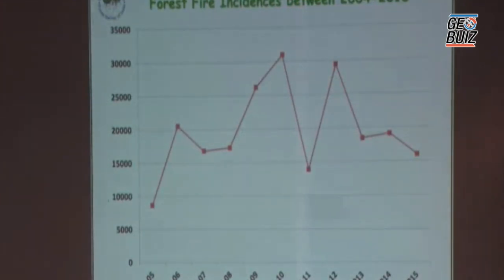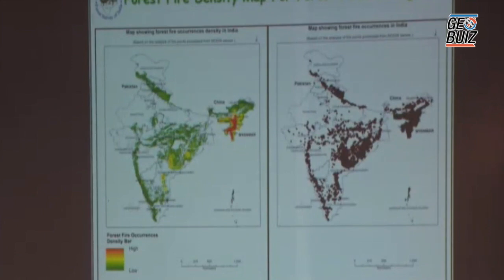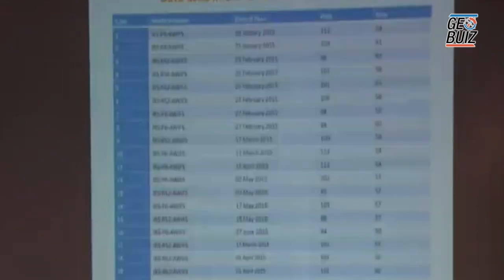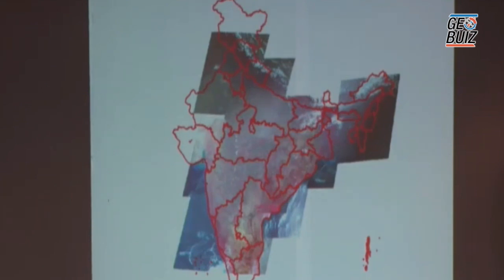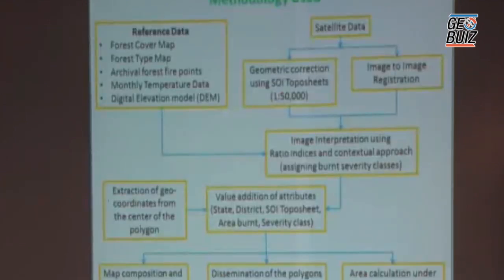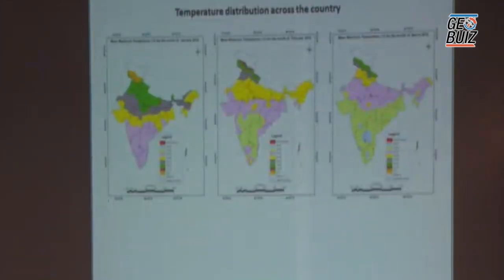These are the fire occurrences reported between 2004 and 2015. The forest fire density occurrence map is very important for selecting a particular satellite scene. Based on the density of forest fire occurrences we identify suitable satellite scenes. In 2015 we identified the number of scenes to be processed and classified. At national level you can see the coverage of data where most fires are reported. The methodology for near-real-time burnt area mapping also uses temperature data from IMD, because we need to identify scenes based not only on fire points but also on temperature and other parameters.